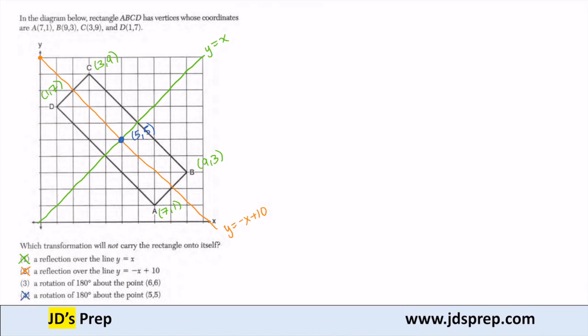The only way that I will not get the same rectangle of these options here is 3. If I rotate it about this point there, (6,6).